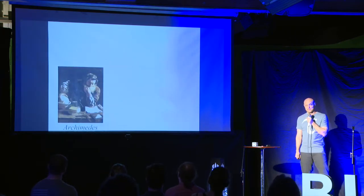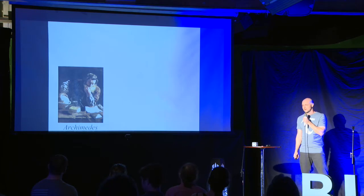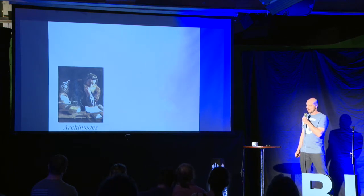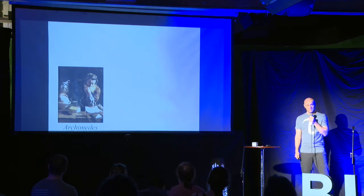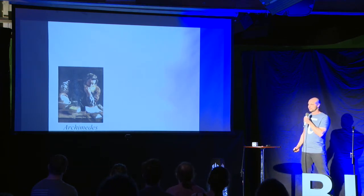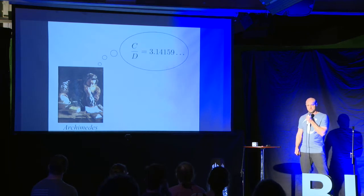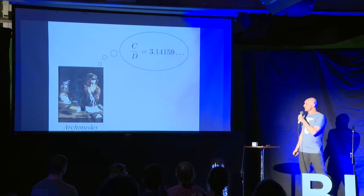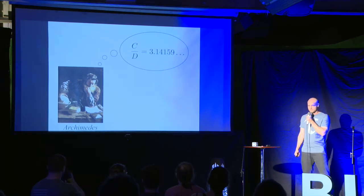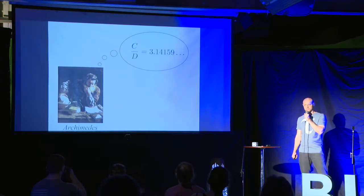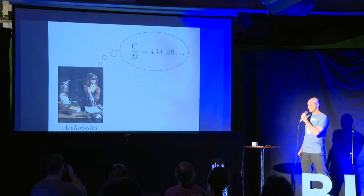Pi was famously approximated by the great Greek mathematician Archimedes of Syracuse. In modern decimal notation, it appears as being a little over three — c over d is 3.14159 and so on.